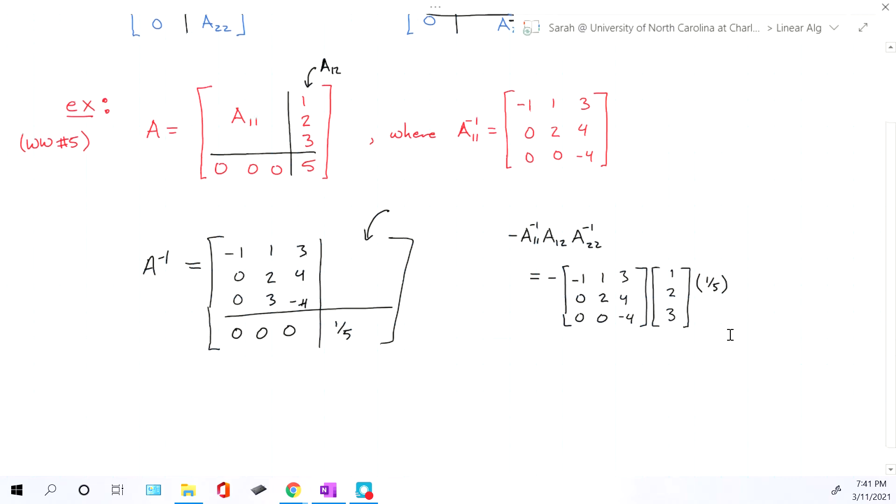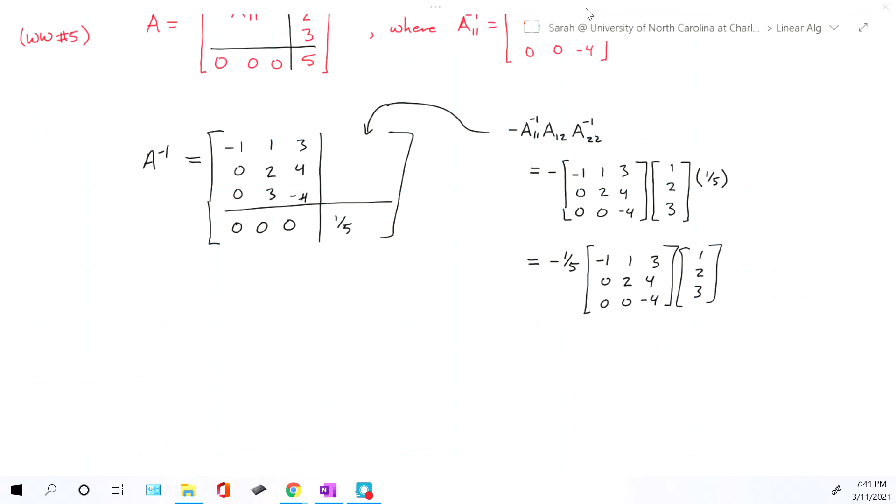Now we just need to calculate that. And once we figure out whatever that new matrix is, that's the thing that goes into the missing piece. So I'm going to pull the one-fifth out front. So we have negative one-fifth. We still need to multiply those two matrices together. At this point, we're just doing matrix multiplication.